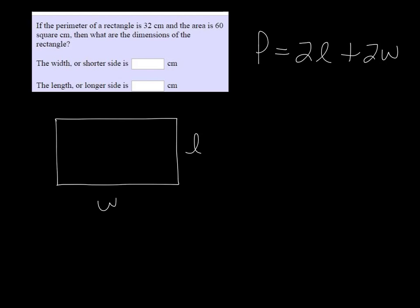And we don't happen to know what w or l are, but we do know what the perimeter is. We know that 2l plus 2w is equal to 32. And we know that length times width is equal to 60 because the area is given, and the area is length times width.